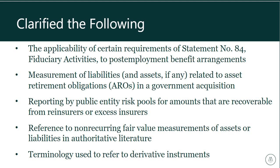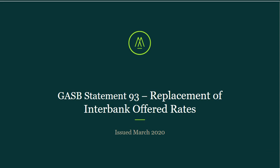The last two are minor changes. One is a reference change in authoritative literature related to non-recurring fair value measurements, literally changing the reference paragraph from 453 to 455 related to mortgage loans. The other is a terminology change: anywhere derivatives are referenced in guidance has been updated to say 'derivative instrument' or 'derivative instruments.' Worth reading — very short — but there are important clarifying items to apply this year.